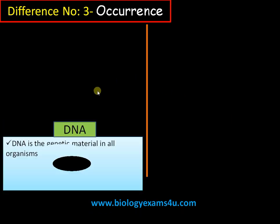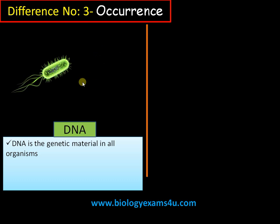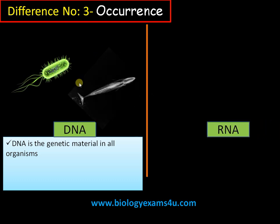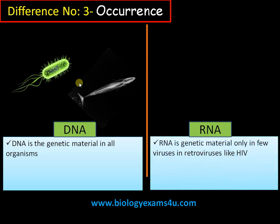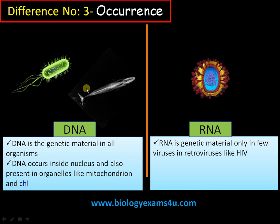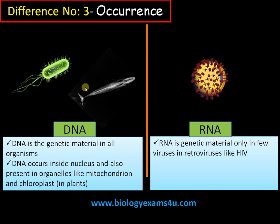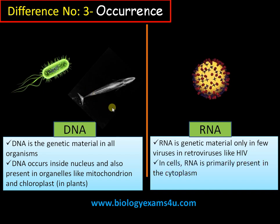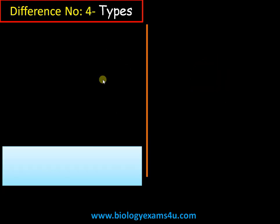The third difference is regarding occurrence. DNA is the genetic material in all organisms — from bacteria to blue whale, from single-celled to multicellular organisms. Whereas RNA is not a genetic material in organisms; it is genetic material only in some viruses like retroviruses. Regarding location, DNA occurs inside the nucleus and also in semi-autonomous organelles like mitochondria and chloroplasts, whereas RNA is primarily seen in the cytoplasm.